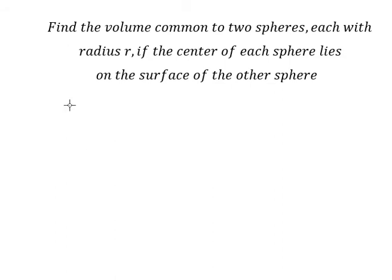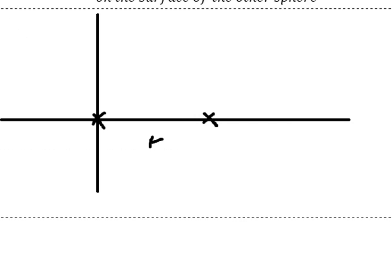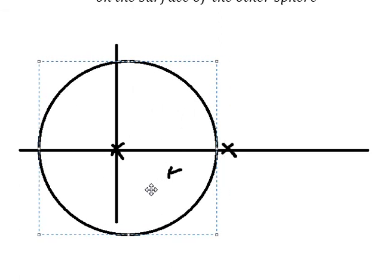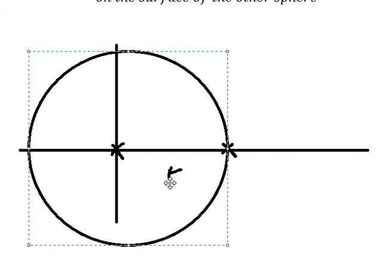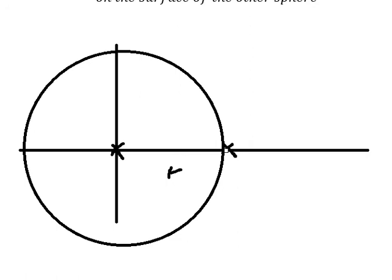The first thing we need to do is draw this. Let's say we have two circles with the center here. We must know that the distance from one center to the other should be r. So we create one circle here and then we have the second one here.